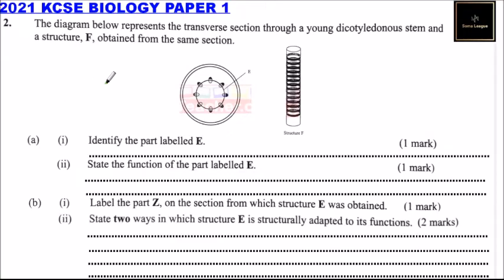Question number two. The diagram below represents the transverse section through a young dicotyledonous stem and structure F obtained from the same section. So we have our structure here, this is labeled E, the transverse section of the young dicotyledonous stem and structure F. We answer the question.